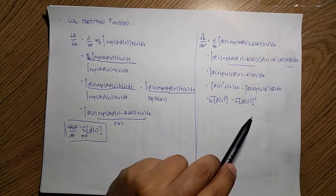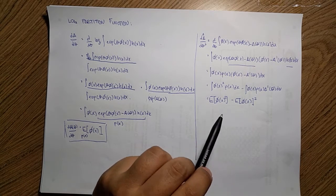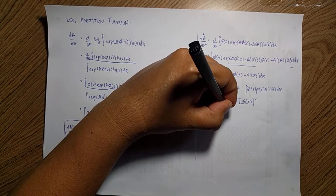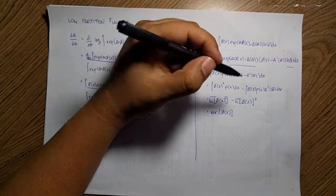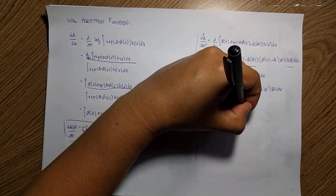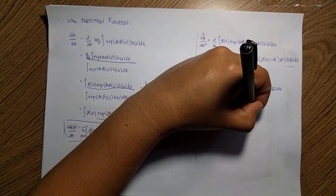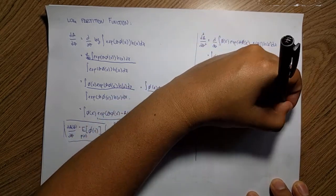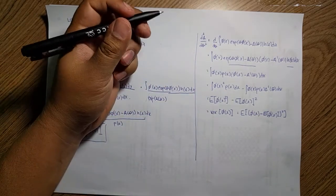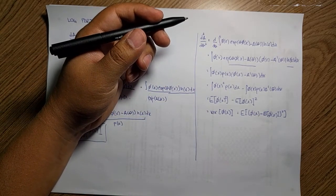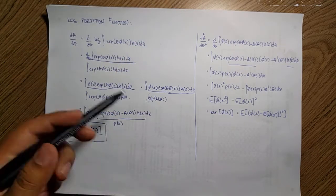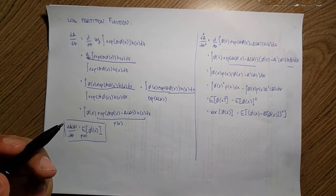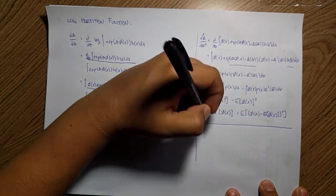Therefore d²A/dθ² = E[φ(x)²] − [E[φ(x)]]², which is exactly the variance of φ(x). You can verify this by expanding (φ(x) − E[φ(x)])² and you'll arrive at the same expression. This pattern holds for every moment. To see it concretely, let's revisit the Bernoulli distribution from the previous session.